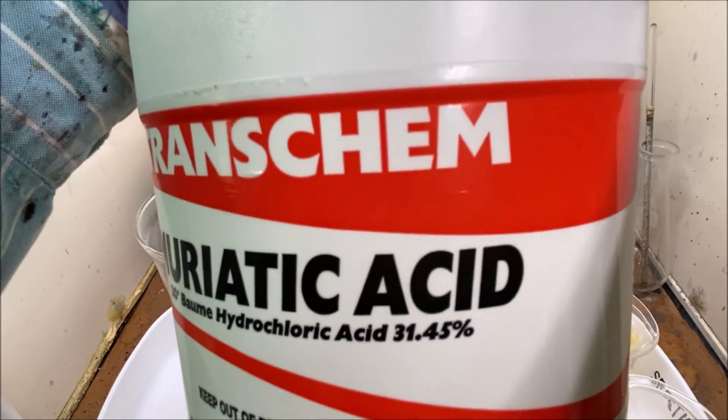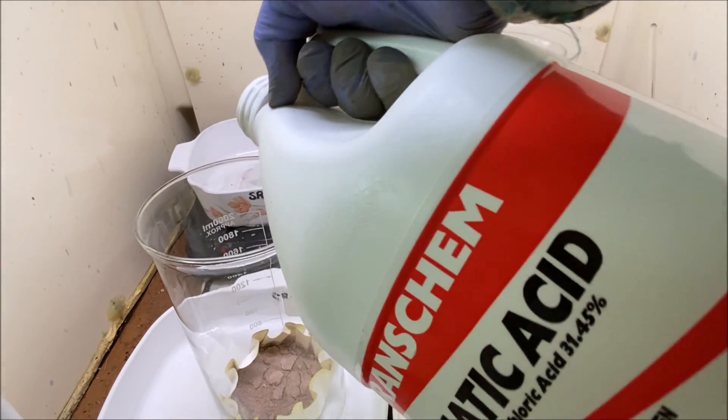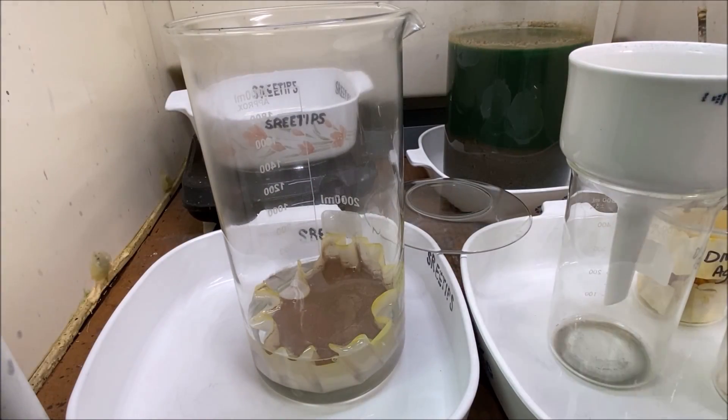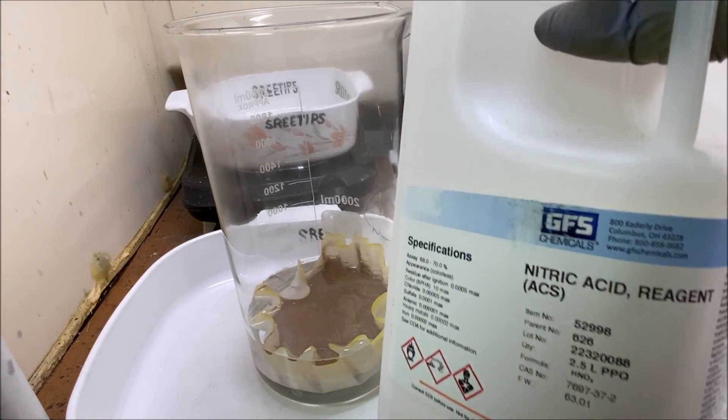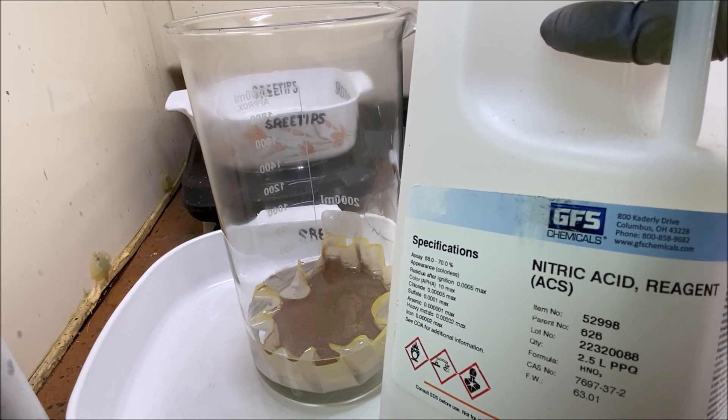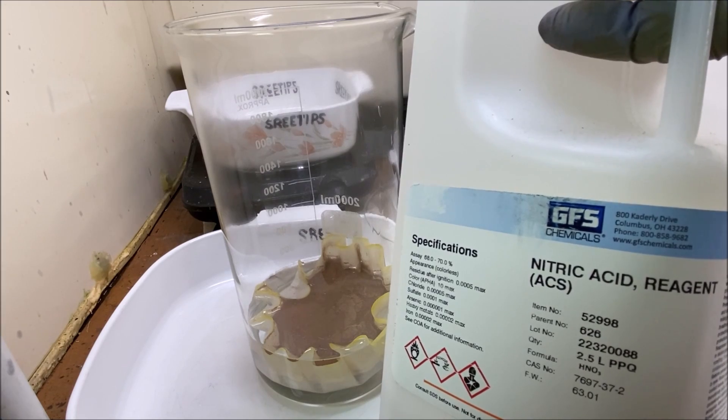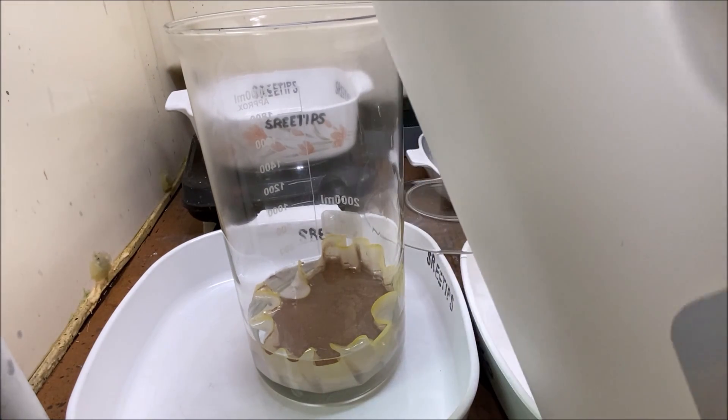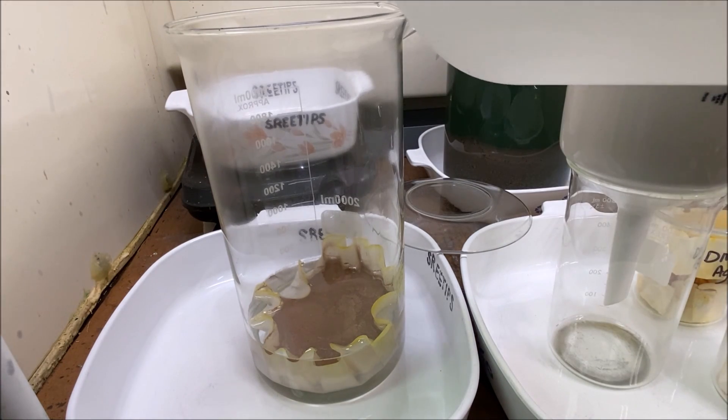I'm adding hydrochloric acid to this. Usually with this kind of material the first extraction gets 95% of all the precious metals that are in the solids. We're going to do another extraction here. I'm going to add a little bit of nitric acid now to form aqua regia in here.